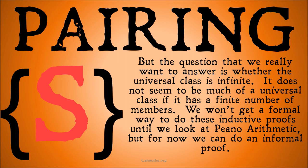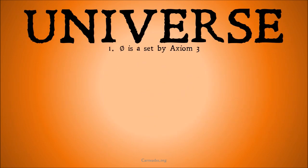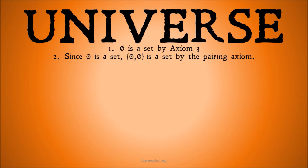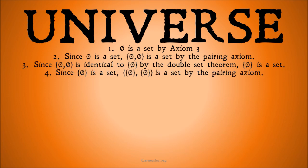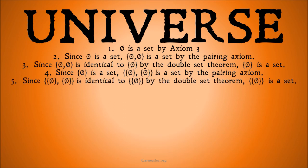First, the null set is a set by axiom three. Since the null set is a set, the set of the null set and the null set is a set by the pairing axiom. Since the set of the null set and the null set is identical to the set of the null set by the double set theorem, the set of the null set is a set — so we now have two sets. Since the set of the null set is a set, the set of the set of the null set is also a set by the same reasoning. And it's a different set than our previous two.